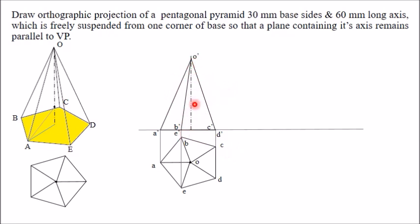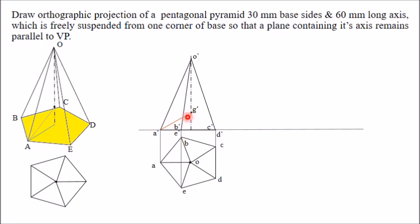Now mark the center of gravity. The center of gravity lies on the axis at a height of h/4 from the base. The total height is 60 mm, so one fourth of 60 mm is 15 mm. Mark the center of gravity G-dash at 15 mm from the base. Now join A-dash to G-dash, because we are suspending the pyramid from point A. The projection of this line in the top view is along AO, which is parallel to the XY line. Therefore, A-dash G-dash is the true length of that line. Now you must redraw the entire pyramid so that A-dash G-dash is vertical.